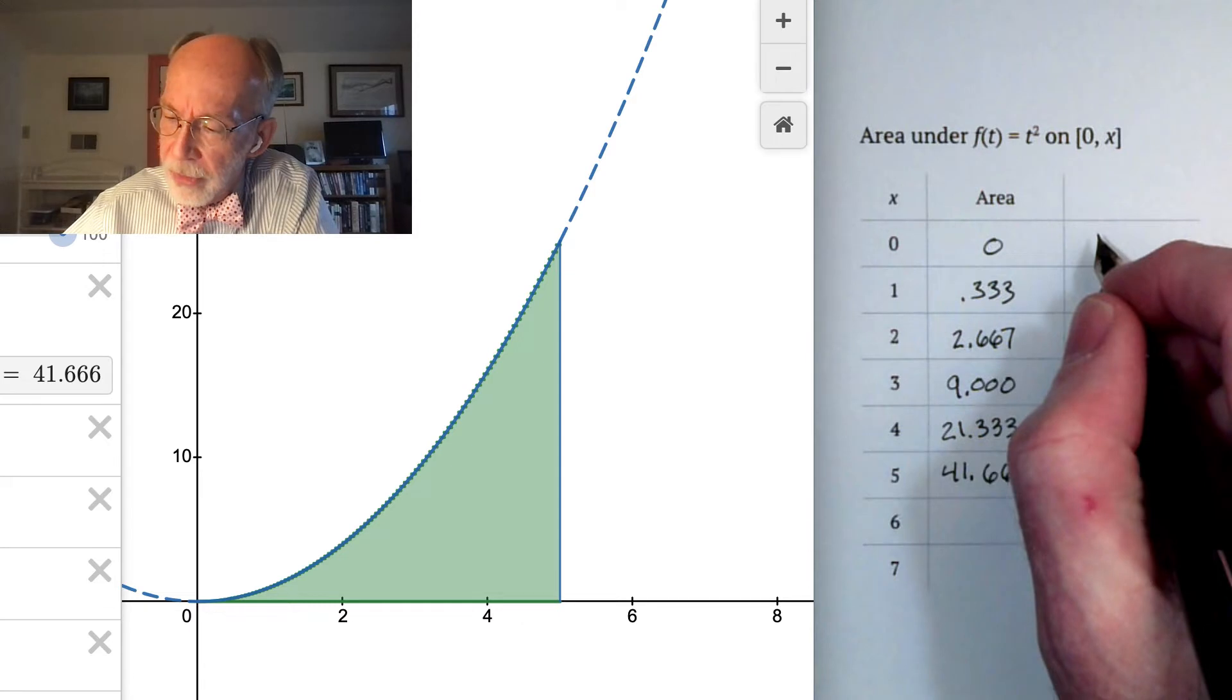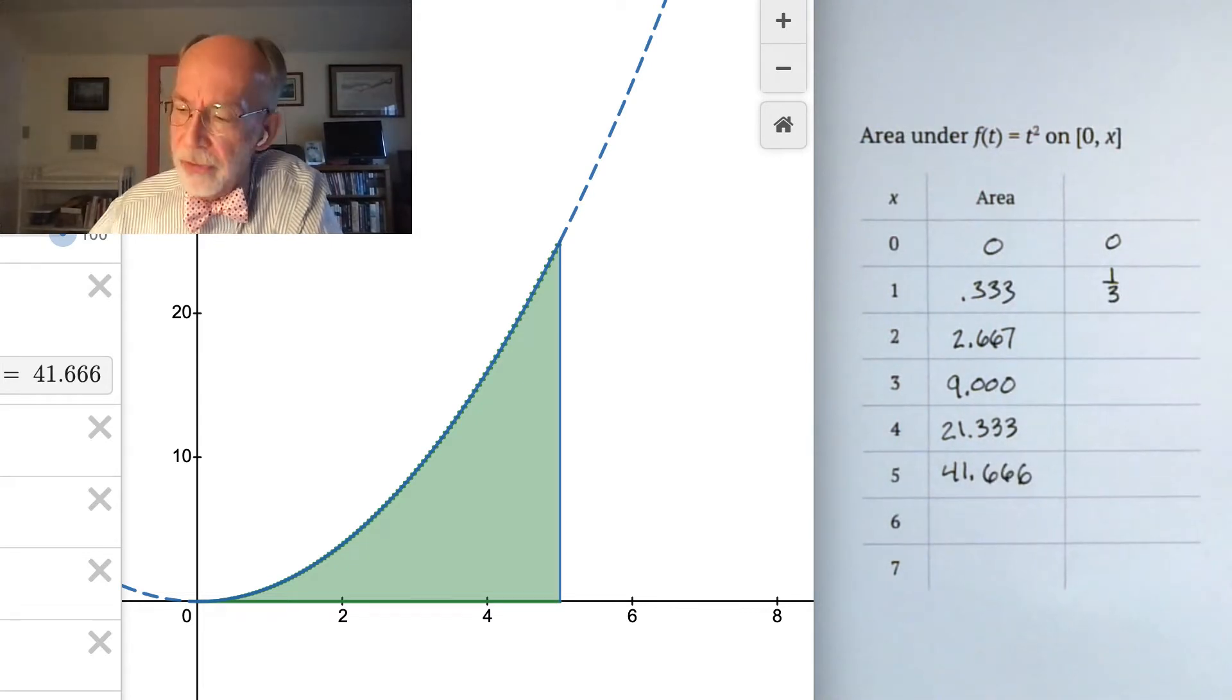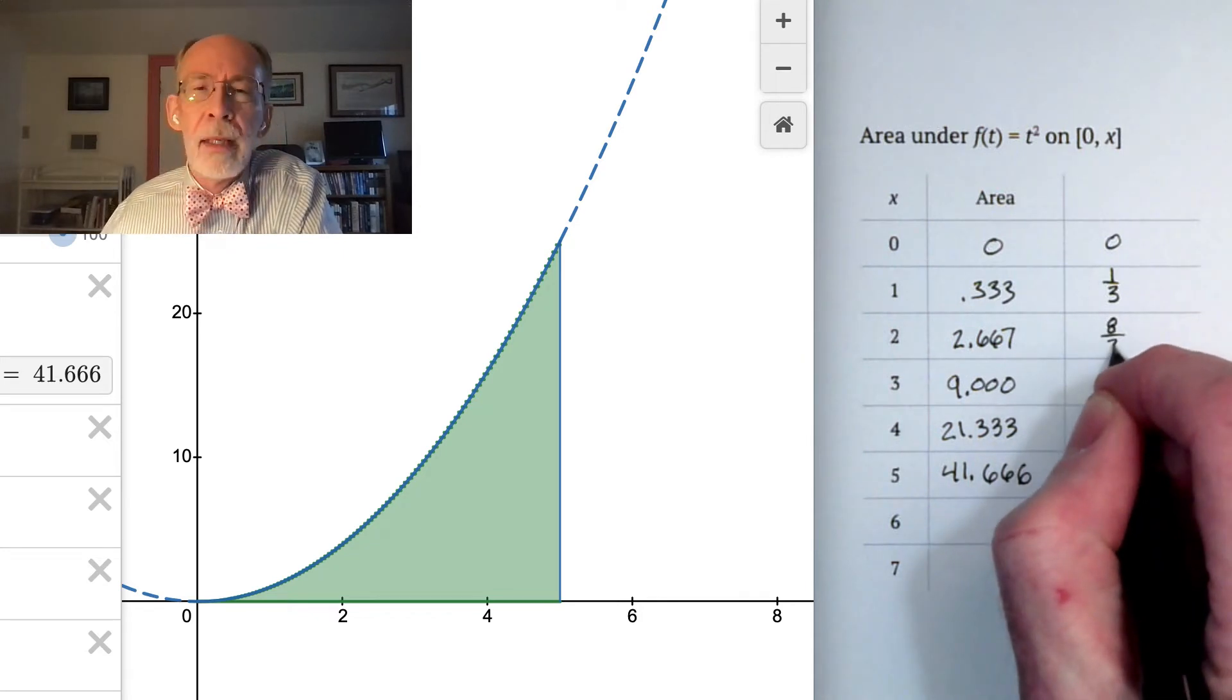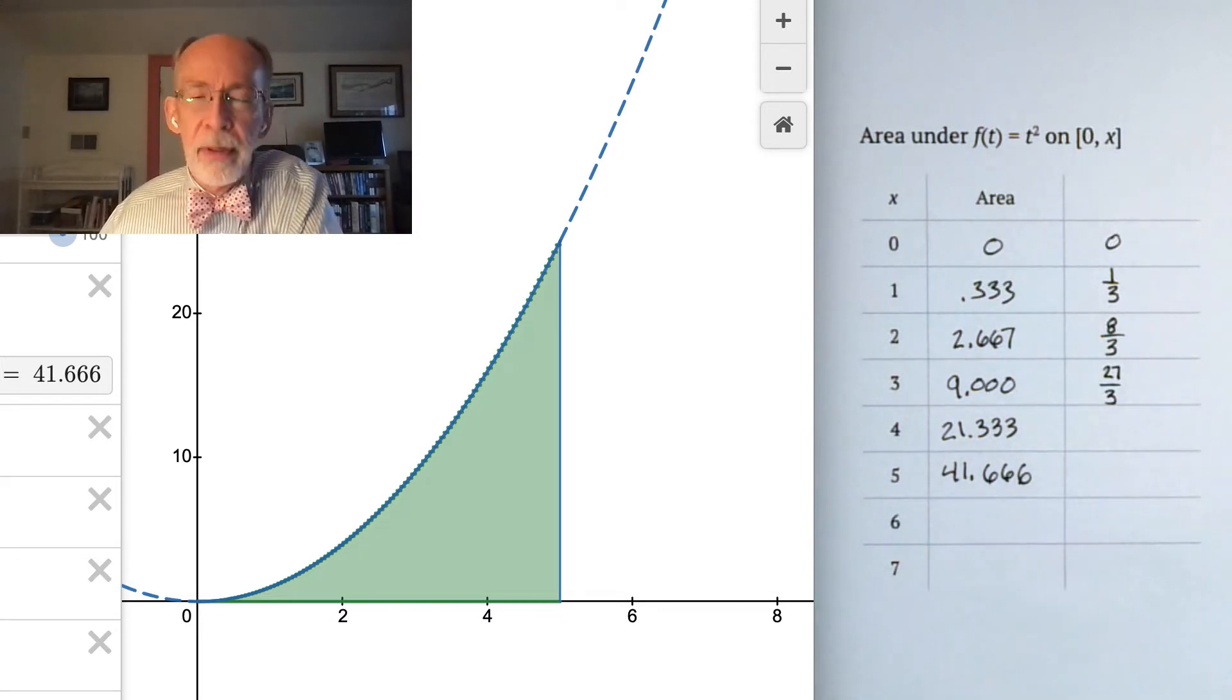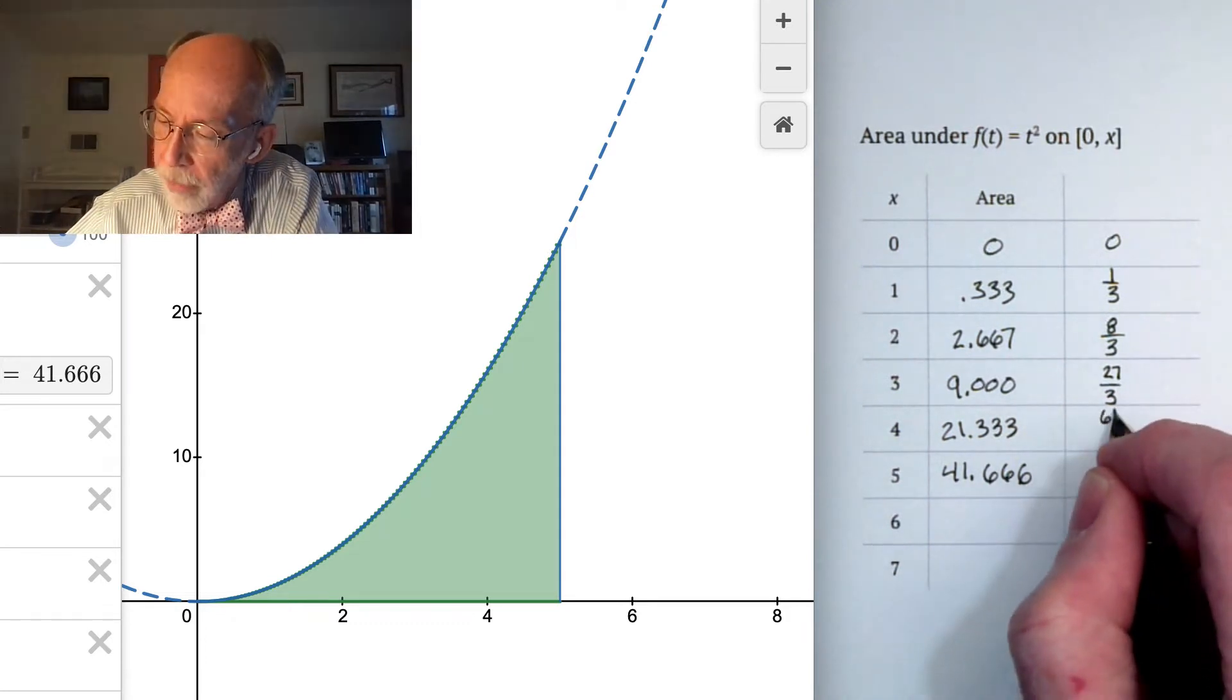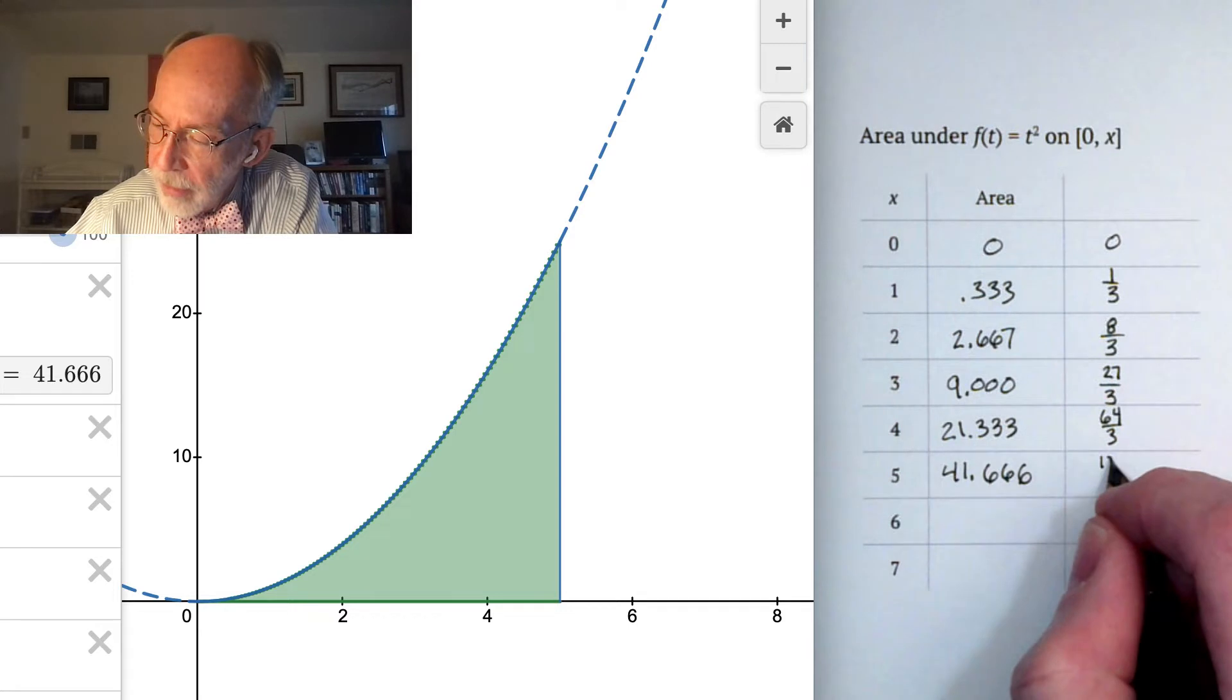0 of course is 0. This is very close to 1/3. 2.667 is essentially 8/3. 9 is of course 27/3. 21.333, if you work it out, is approximately 64/3. And for 5, the 41.666, that is about 125/3.